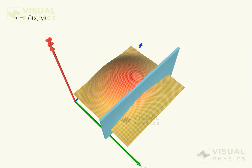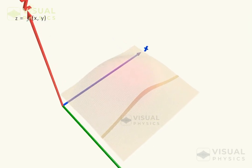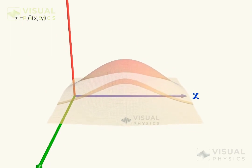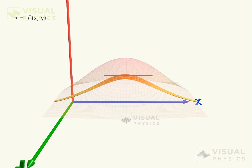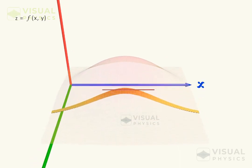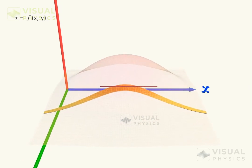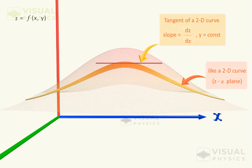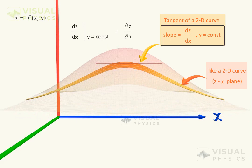If we take the cross section of this surface with respect to the y axis, then the tangent at this point in the xz plane will have a unique value. This cross section with respect to the y axis means that we have taken y to be constant while we measure the slope of the curve in the xz plane. This is the partial derivative of the function with respect to x when y is taken to be constant.